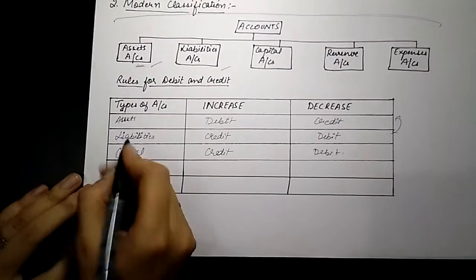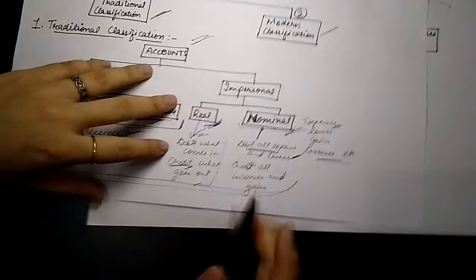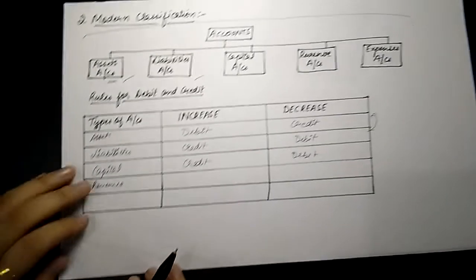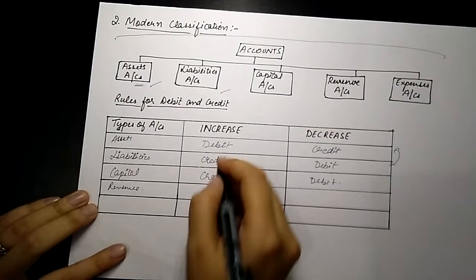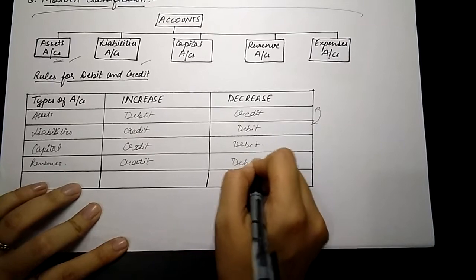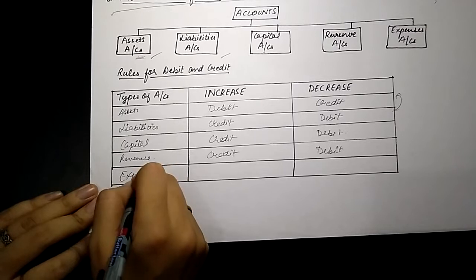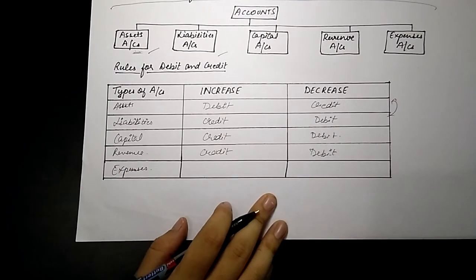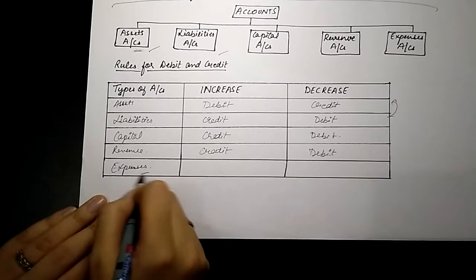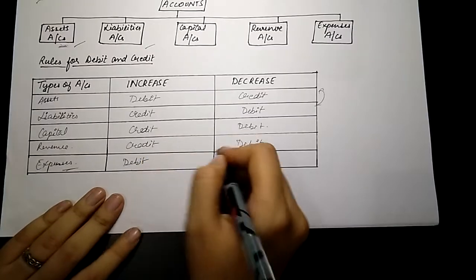Same goes for revenue — because we studied in nominal accounts that we credit all incomes and gains, and revenue is income or gain. So if revenue increases, we credit it; if it decreases, we debit it. Last is expenses — as studied in traditional approach, debit all expenses and losses. So if expenses increase, we debit them; if they decrease, we credit them.